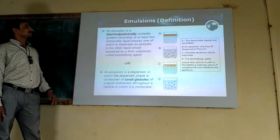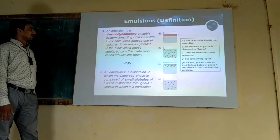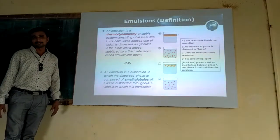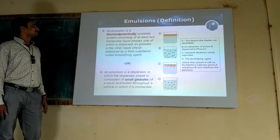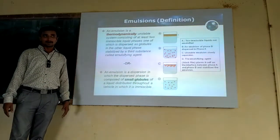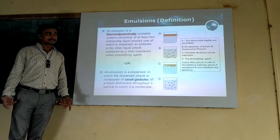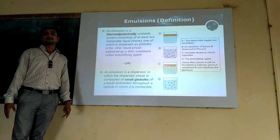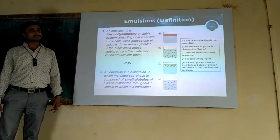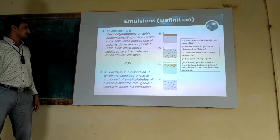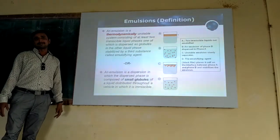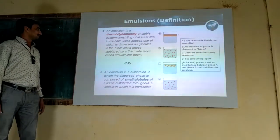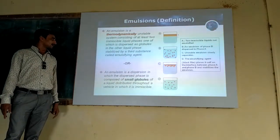Emulsion can be defined in different ways. One definition involves thermodynamic stability: emulsions which are thermodynamically unstable can become unstable due to changes during preparation — these are called thermodynamically unstable emulsions. Another definition describes emulsion as a system where oil or liquid is dispersed into another liquid phase.